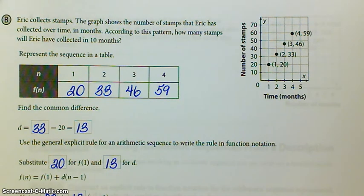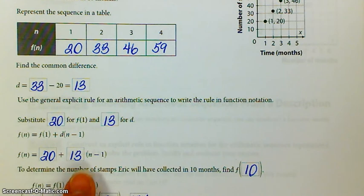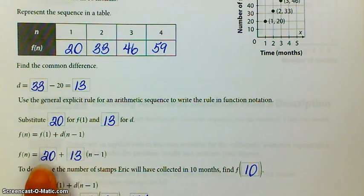f of 1 is 20. Common difference is 13. All I do is take those things and put them into my explicit rule. So 20 plus 13 n minus 1.